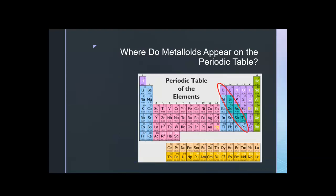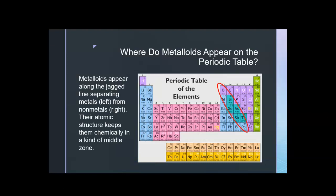Where do metalloids appear on the periodic table? Metalloids appear along the jagged line separating metals on the left from non-metals on the right. Their atomic structure keeps them chemically in a kind of a middle zone. So we have things like boron, silicon, germanium, arsenic, antimony, and tellurium.